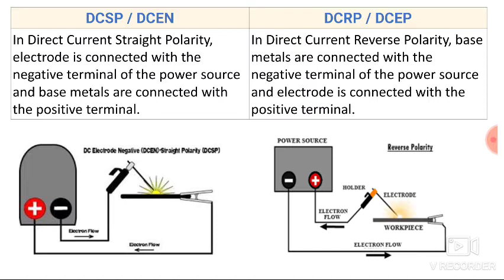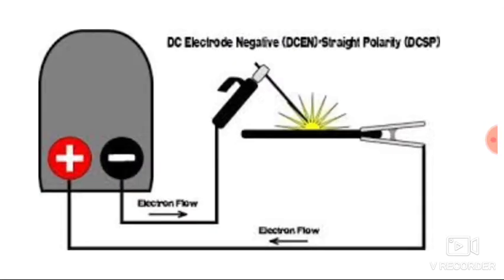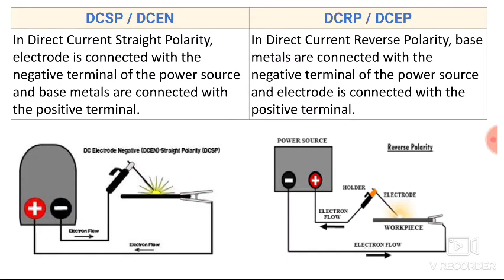For differentiating these two polarities, I have made two different columns with figures for better understanding. In direct current straight polarity, the electrode is connected with the negative terminal of the power source and the base metal is connected with the positive terminal. Here you can see the straight polarity — the electrode is connected with the negative terminal whereas the base plate is connected with the positive terminal. Such a condition is known as straight polarity.